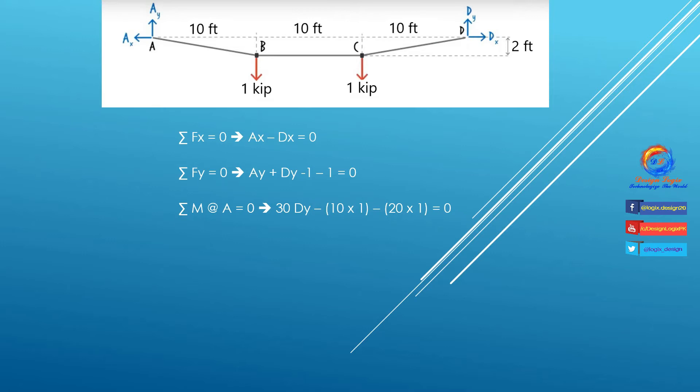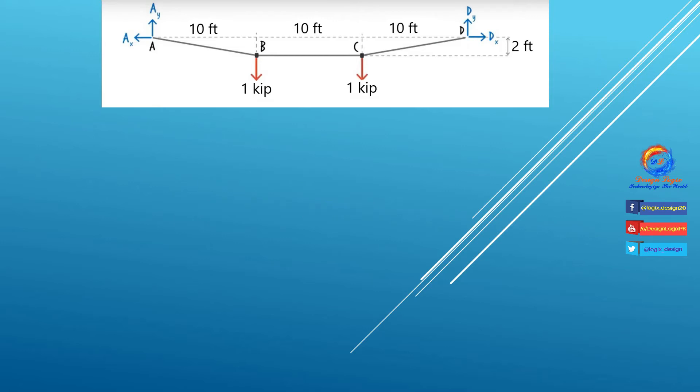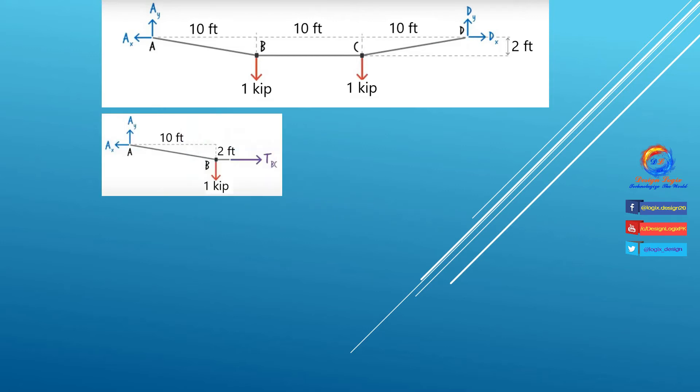Since we have 3 equations and 4 unknowns, we cannot solve the system directly. So let's cut a section at B. After cutting the section at B, the free body diagram looks like this. Now we have 1 unknown horizontal force at joint B due to cable BC.